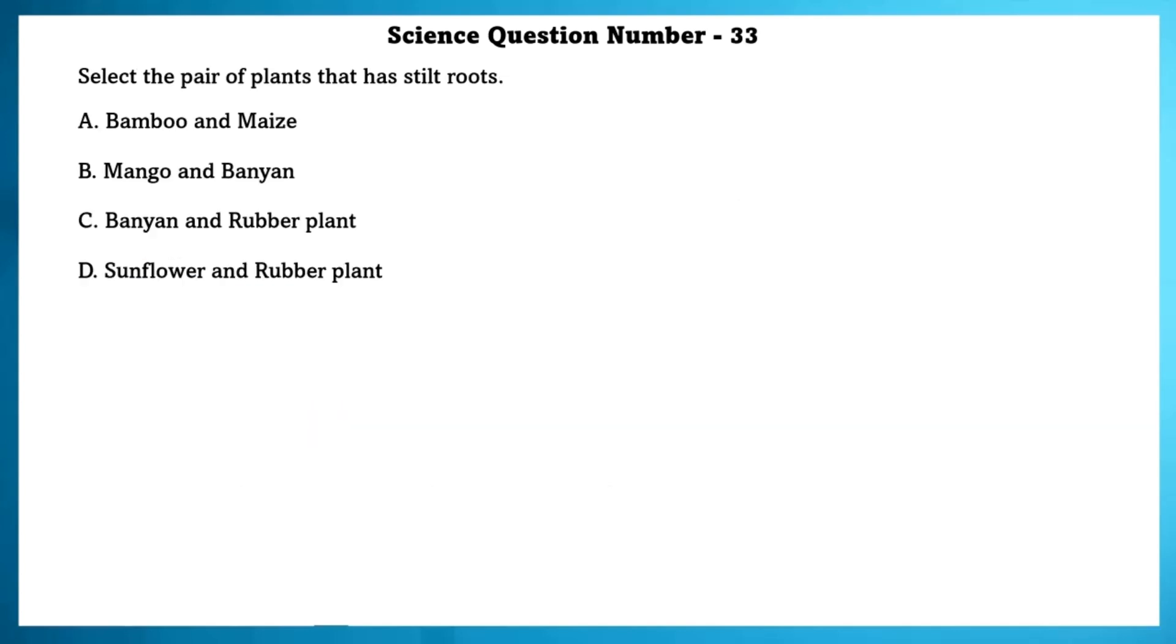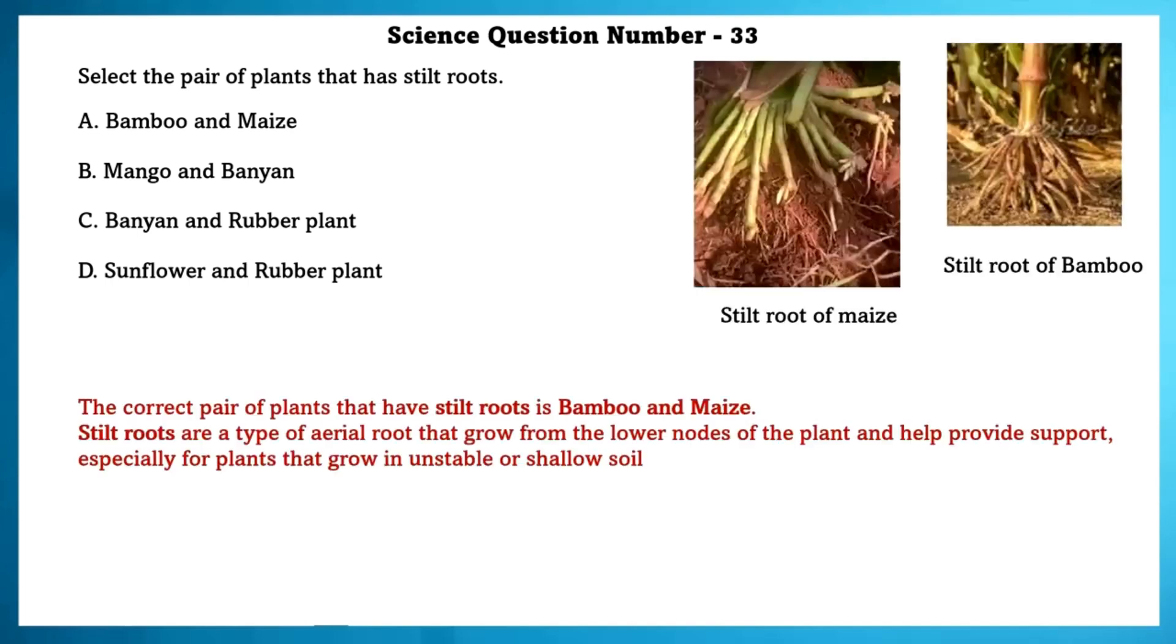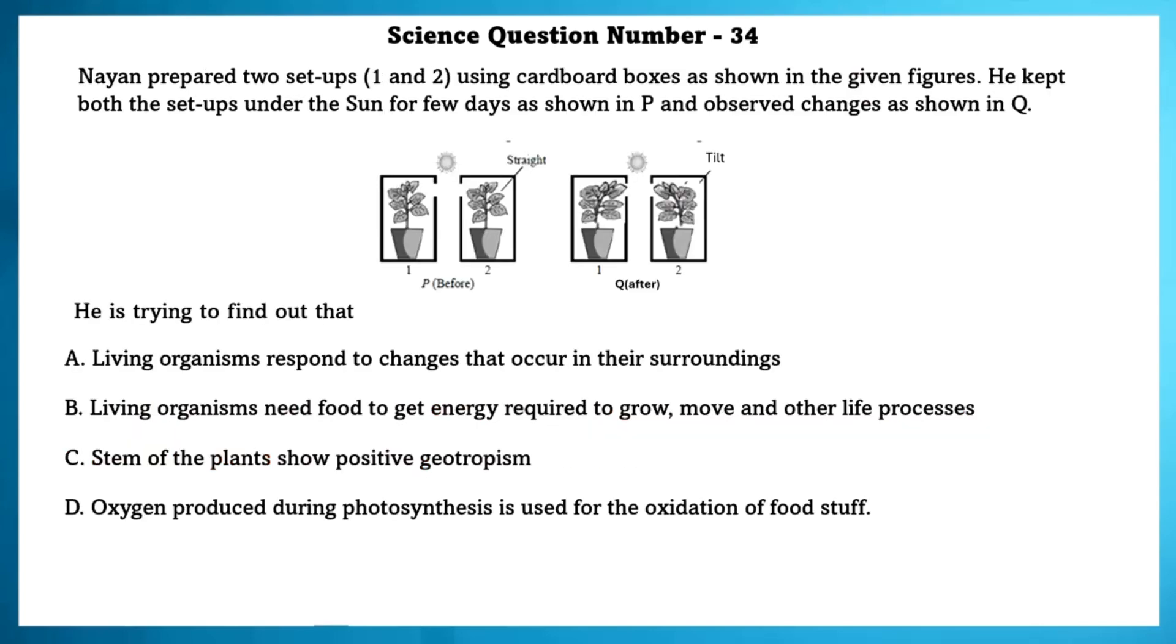Science question number 33. Select a pair of plants that has stilt roots. The correct pair of plants have stilt roots is bamboo and maize. Stilt roots are a type of aerial root that grows from the lower nodes of the plant and help provide support especially for the plant that grows in unstable or shallow soil. Science question number 34. Nayan prepared two setups, one and two, using cardboard boxes as shown in the given figure. He kept both the setups under the sun for a few days as shown in the P and observed changes as shown in Q. He is trying to find out that living organisms respond to changes that occur in their surroundings.